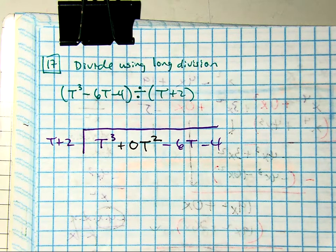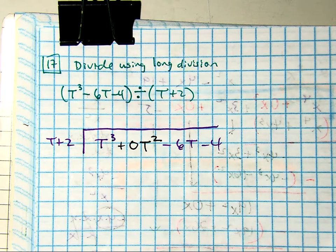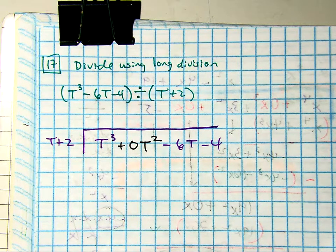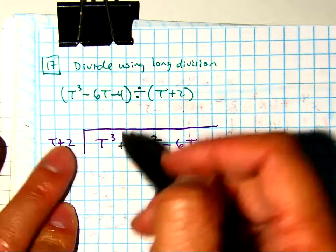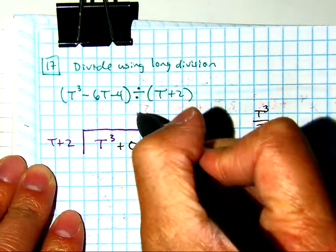Andrea, what should we do first? Divide. Okay, how many times does T go into T to the third? T squared.